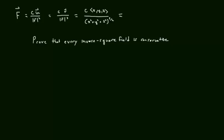The goal is to prove this is conservative. In other words, we want to show that this vector is del f for some scalar f. We can use magic or intuition. Let's call scalar f equal to negative c over the square root of x squared plus y squared plus z squared.